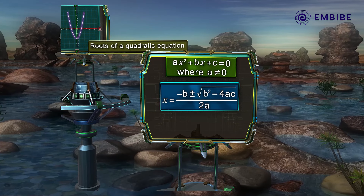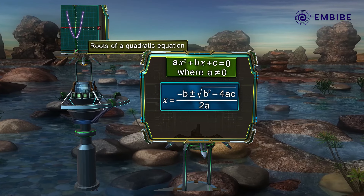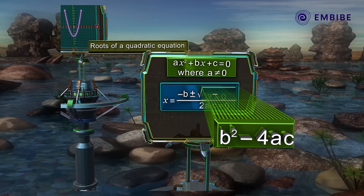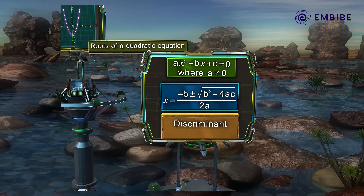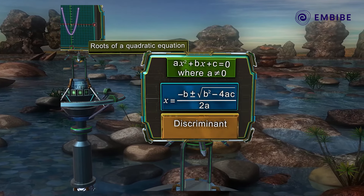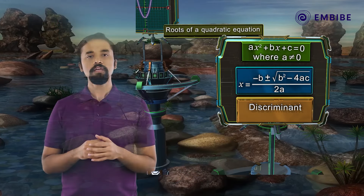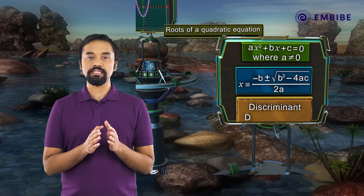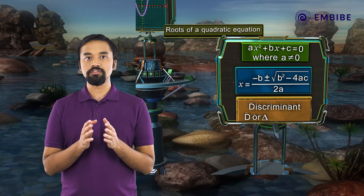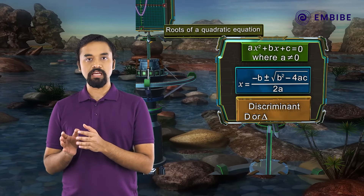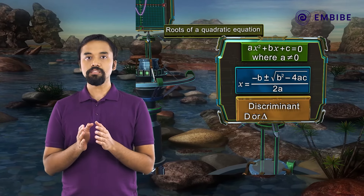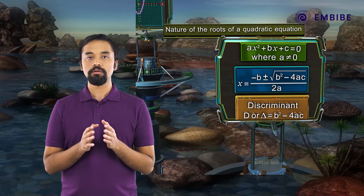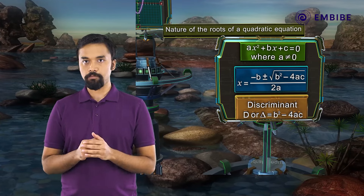The expression under the radical sign, that is b² − 4ac, is called the discriminant of the quadratic equation. The discriminant D or delta is equal to b² − 4ac.